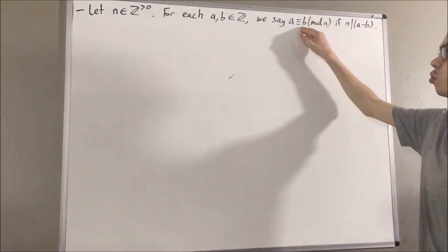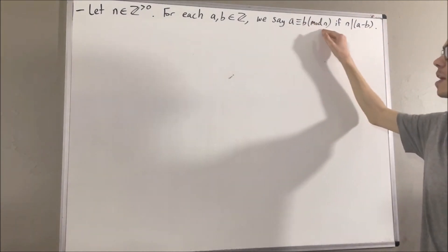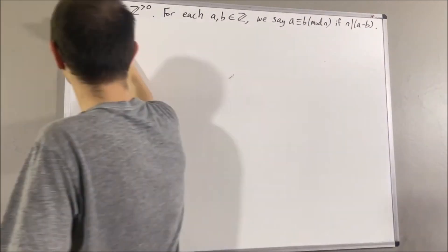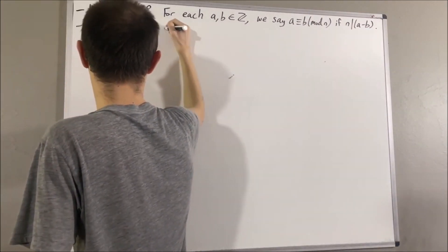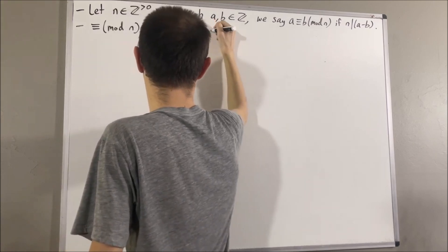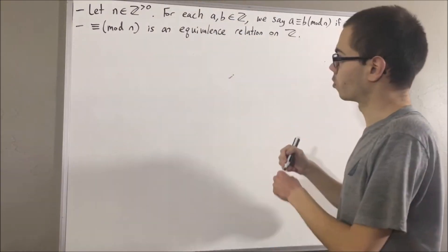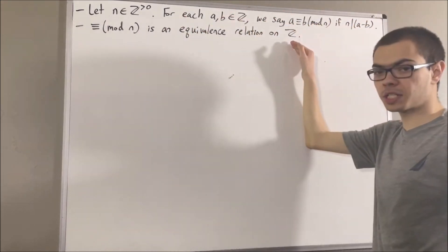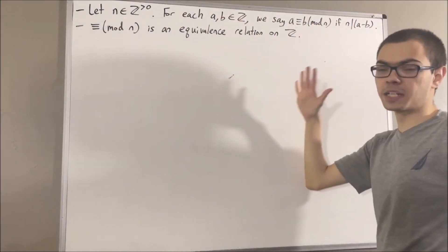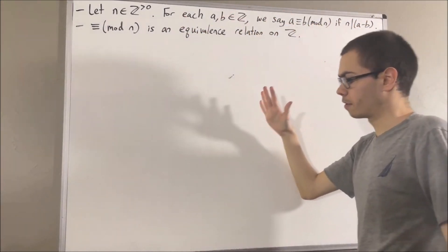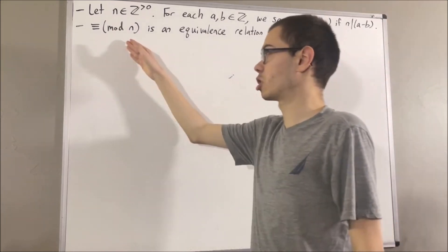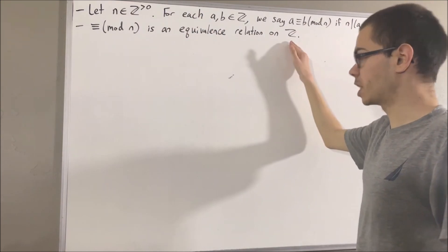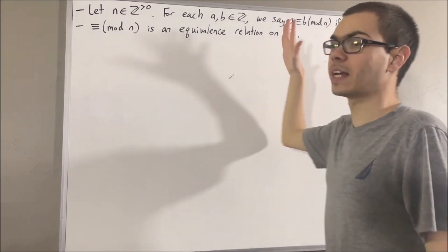We have proven that congruence modulo n is an equivalence relation on the integers. In other words, congruence modulo n is reflexive on the integers, symmetric, and transitive. And because congruence modulo n is an equivalence relation on the integers, this tells us every integer has an equivalence class.